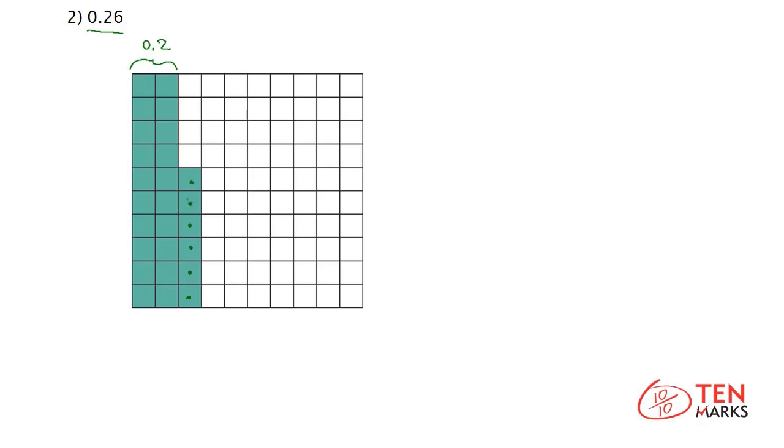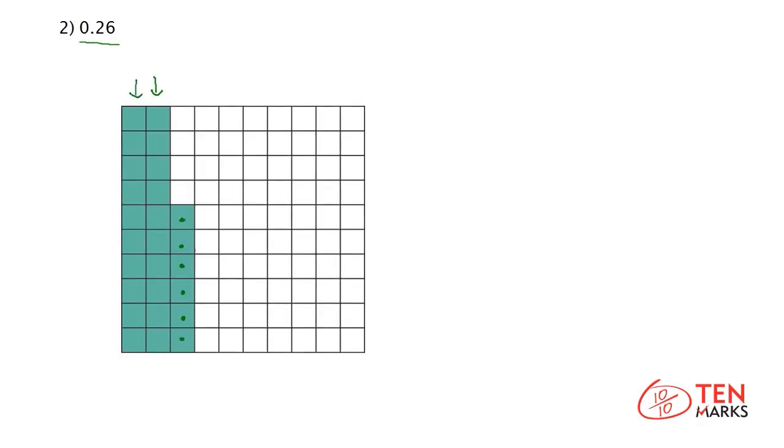Which is 26 hundredths closer to? 2 tenths or 3 tenths? You can see that 26 hundredths lies between 2 tenths and 3 tenths, but it is closer to 3 tenths. It rounds up. 26 hundredths rounded to the nearest tenth is 3 tenths.